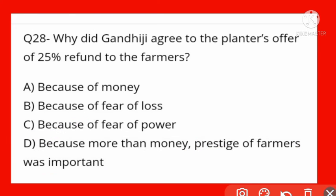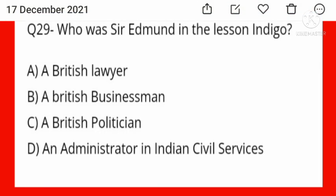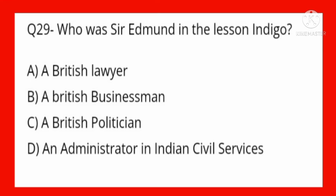Who was Sir Edmund in the lesson Indigo? Options: a British lawyer, a British businessman, a British politician, an administrator in Indian Civil Services. Option D is correct — an administrator in Indian Civil Services. Sir Edmund was a prashasak in the Indian Civil Services.